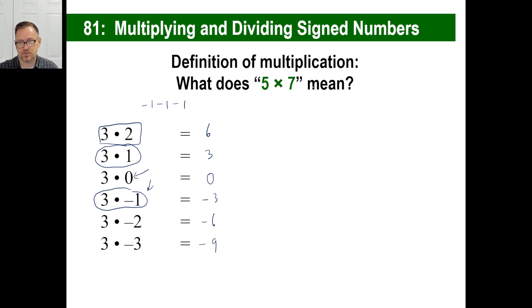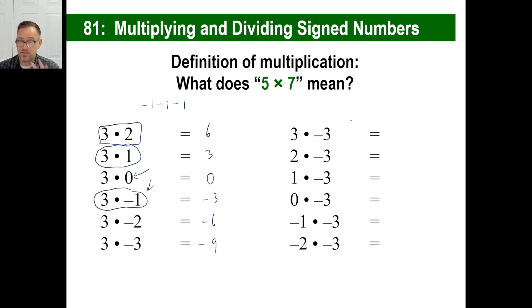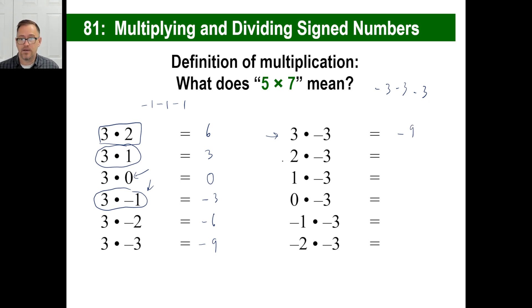Here's where it gets kind of funky. Three times negative three means there are three negative threes — negative three, negative three, negative three — all together gives you negative nine. Two times negative three means there are just two of them: negative three and negative three. Negative three minus three is negative six. One times negative three is negative three. None of them is zero, of course.